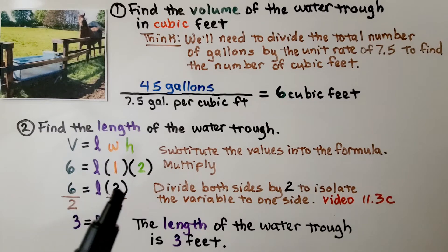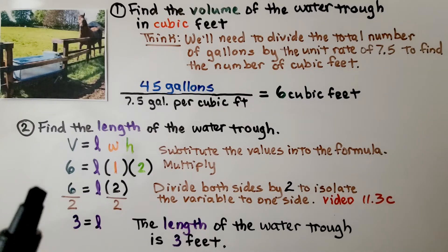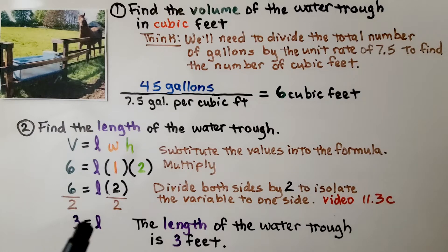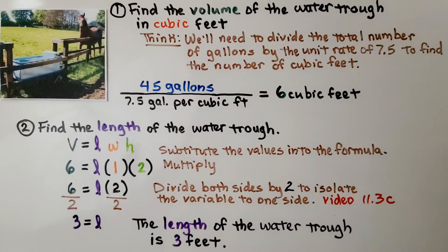We divide both sides by this 2 to isolate this variable L to one side. We have 2 divided by 2 and 6 divided by 2. That gives us 3 is equal to 1L. We have the same numerator and denominator, so that's a 1. We just have 1L. We know the length of the water trough is 3 feet.